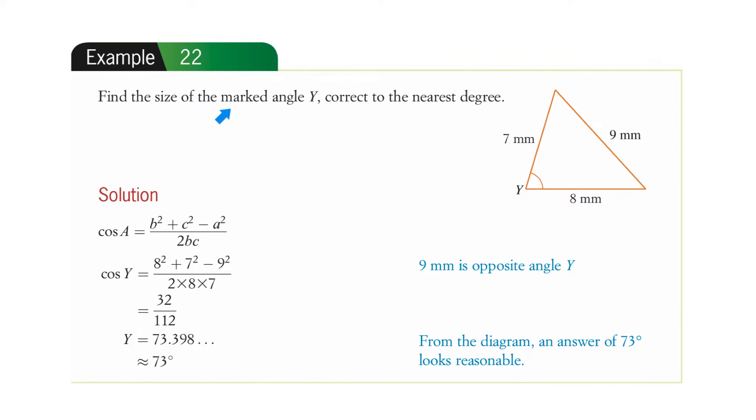Example 22. Find the size of the marked angle Y correct to the nearest degree. So we've got to find that angle. We have all we need. We only need to know the lengths of the three sides of the triangle and we can find any angle. We're going to use it in this form here. You can start with it the other way, that's okay, and just rearrange it. This is also provided in the formula booklet in this form.